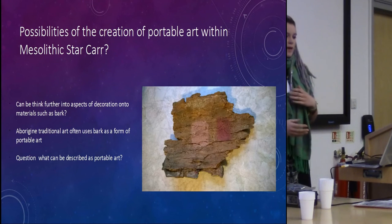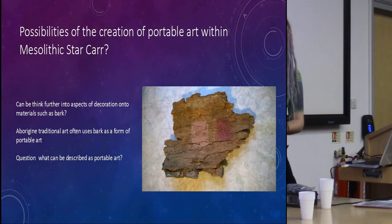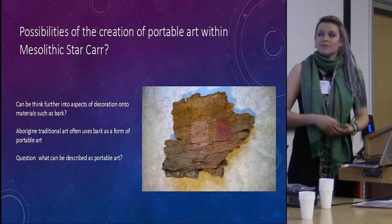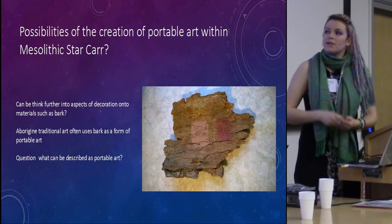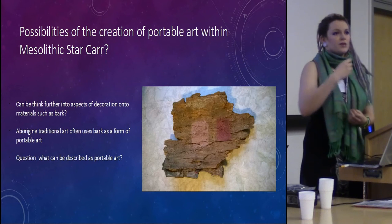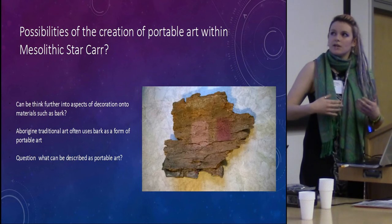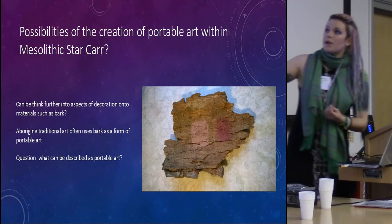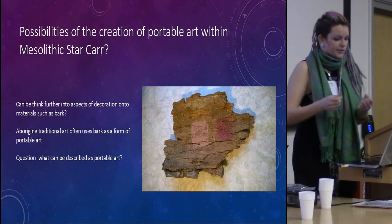After doing some ethno-linguistic investigations — Aboriginal traditional arts often use things such as bark. Bark is a fantastic form: it's easy to apply pigment, it's quite durable, but it can also be discarded or used for kindling — all these different things, so it's very fluid in nature. So what I did is took my experimental pigment work and applied it to things such as bark. What did this look like? How did it change the colour? How is this applying to a physical record?